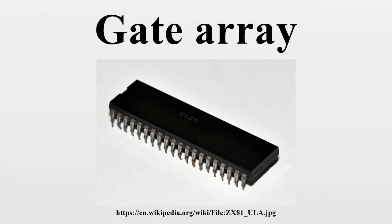Sinclair Research ported an enhanced ZX-80 design to a ULA chip for the ZX-81, and later used a ULA in the ZX Spectrum. A compatible chip was made in Russia as the T-34VG-1. Acorn Computers used several ULA chips in the BBC Micro, and later a single ULA for the Acorn Electron. Many other manufacturers from the time of the home computer boom period used ULAs in their machines.